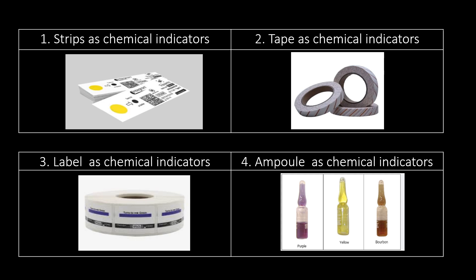Refer to these four photographs of different types of chemical indicators: first, strips as a chemical indicator; second, tape as a chemical indicator; third, label as a chemical indicator; and fourth, ampoule as a chemical indicator.